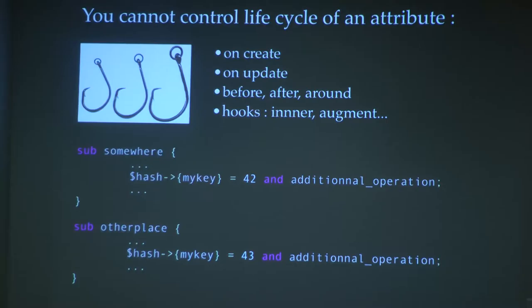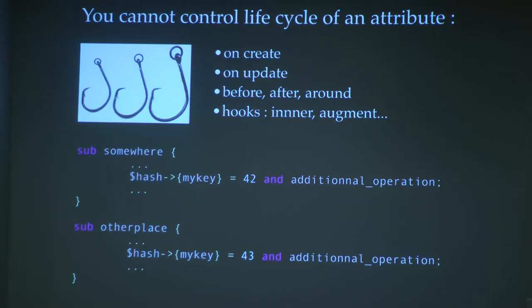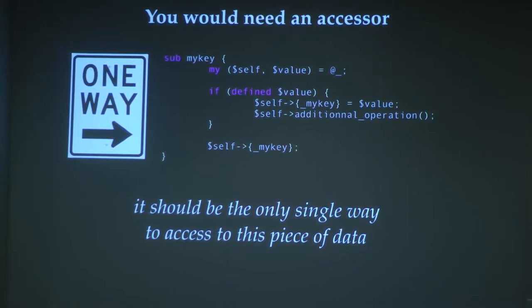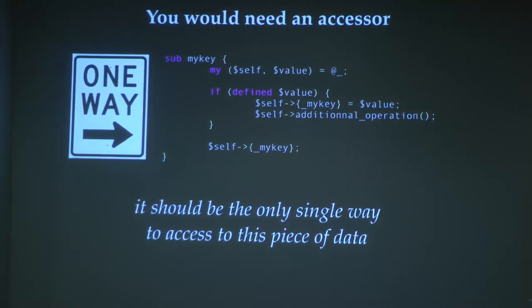These rules are true in any language — JavaScript, Ruby, Python — if you use direct access to data, you'll have these issues. You need one accessor: a single guard of that data, the only way to access it. A simple accessor checks if you're setting a value or reading it, and always returns it. This is true more than just Perl rules — it's true for any language.